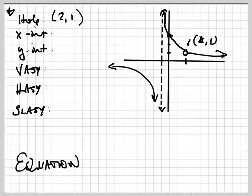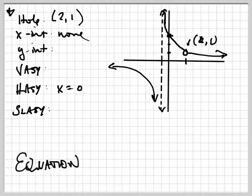So write 2 comma 1. The x-intercept, there's none, because it's a horizontal asymptote, so we'll write y equals 0, which is this line, the x-axis is y equals 0.